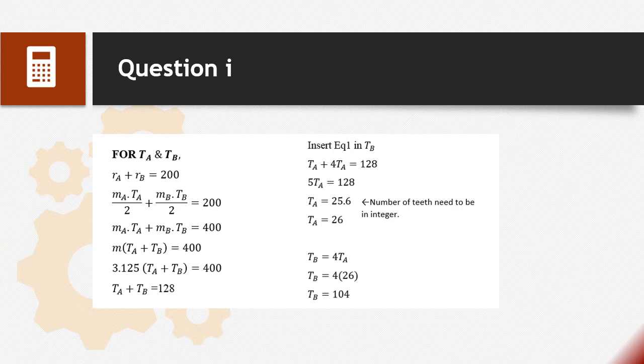To find TA, we insert equation 1 in TB. TA plus 4TA equals 128. We get value of 25.6 for TA, but the number of teeth needs to be an integer, so TA equals 26. To find TB, we use equation 1: TB equals 4TA. We change TA to 26, so TB equals 104.